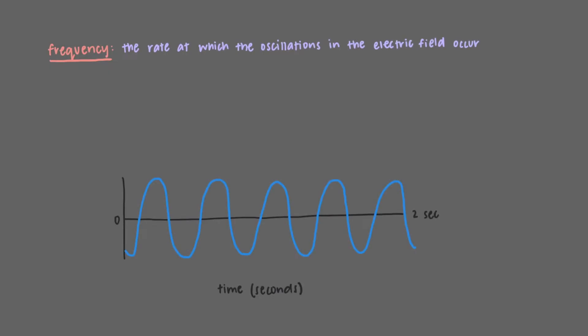Another property of light is something that we call frequency, the rate at which oscillations in the electric field occur. We can measure the frequency by counting the number of waves that pass through a location per second for a traveling wave. We use the Greek letter nu to represent frequency. The units of frequency that we use are hertz, which is the same as the unit reciprocal second.